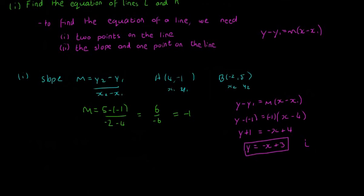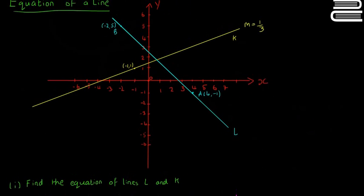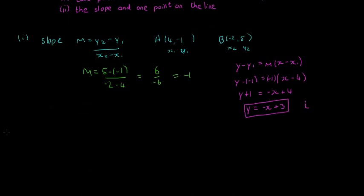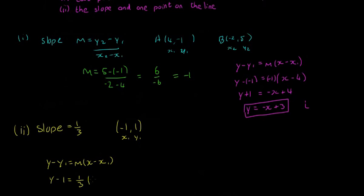Now we're going to try the second one, which is actually going to be easier still. Here we have minus 1 and 1 is one of the points, and the slope is 1 over 3. So slope is equal to 1 over 3, and our point is going to be minus 1 and 1. That's X1 and Y1. We can sub it straight into our formula now. We don't have to get the slope first because we already have it. So Y minus Y1 is going to be 1 is equal to M, 1 over 3, by X minus X1, which is going to be minus minus 1.